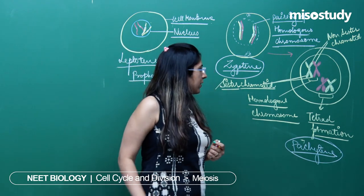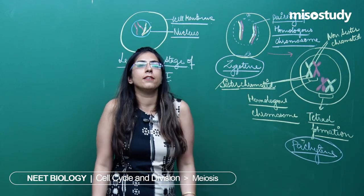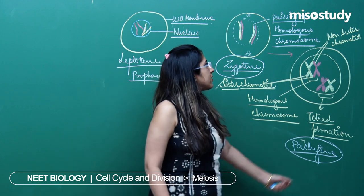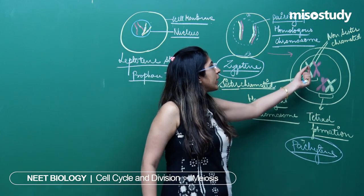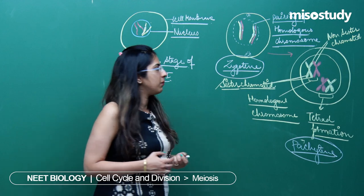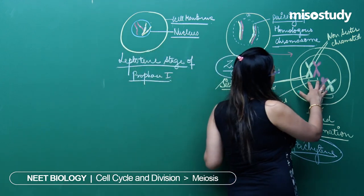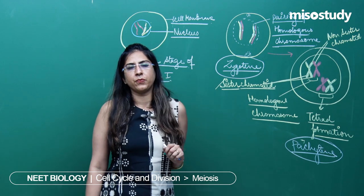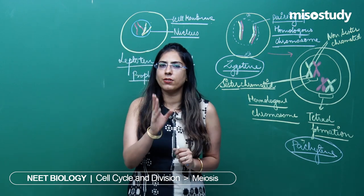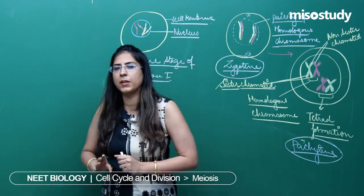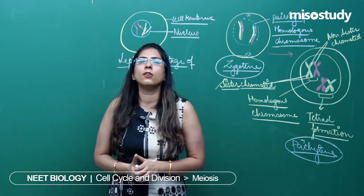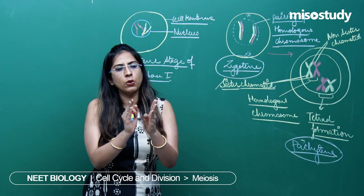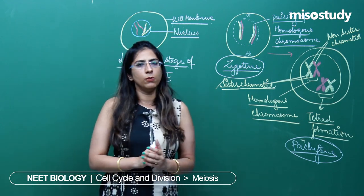The next stage we have is the pachytene stage. As we know, pairing has taken place and the synaptonemal complex has formed. The tetrad chromosomes come closer and later the crossing over will occur. Crossing over is an exchange of a segment of the chromosome between non-sister chromatids of the homologous chromosome.